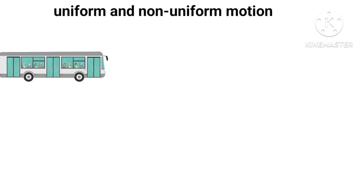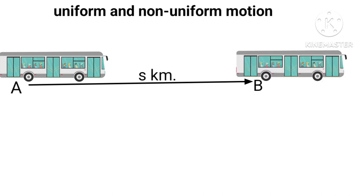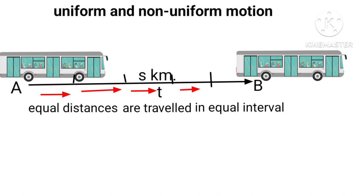Let us consider a bus starting from A, traveling a distance of S kilometers to B on a straight road. The bus travels each kilometer in equal interval time T. What we see is equal distances traveled in equal intervals of time. This is uniform motion.